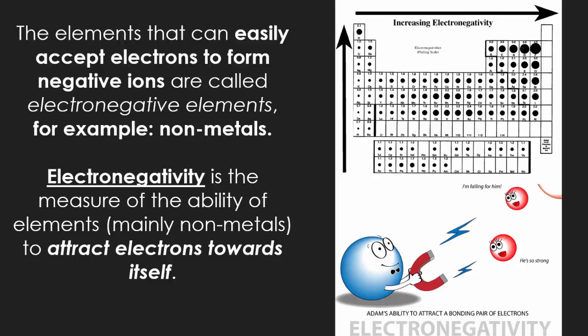The elements that can easily accept electrons to form negative ions are called the electronegative elements — for example, nonmetals. Nonmetals have the tendency to gain electrons, thus making them electronegative. Electronegativity is the measure of the ability of the element to attract electrons towards itself.